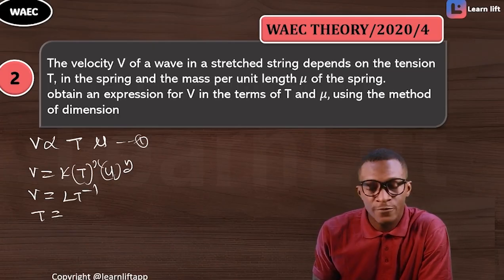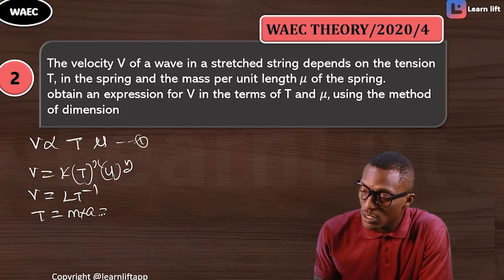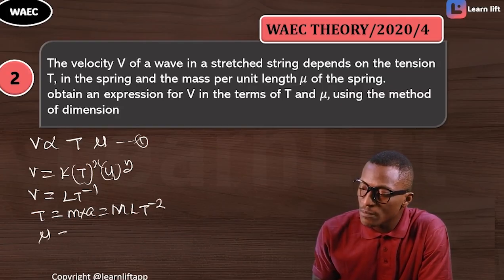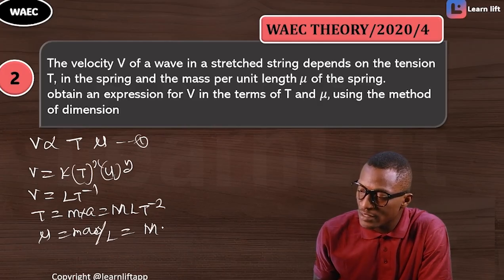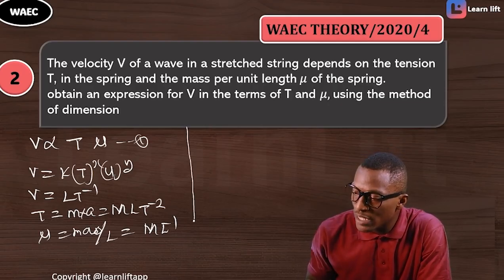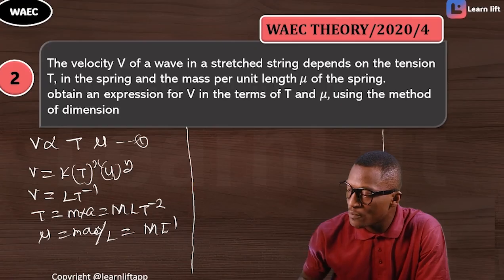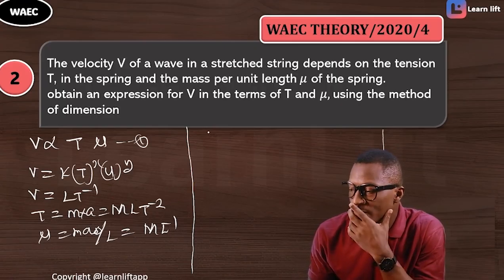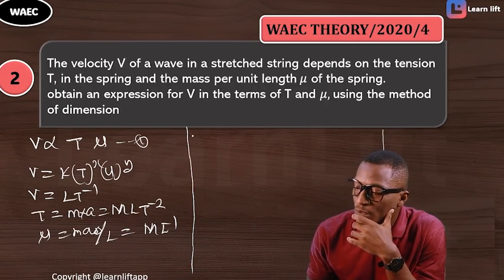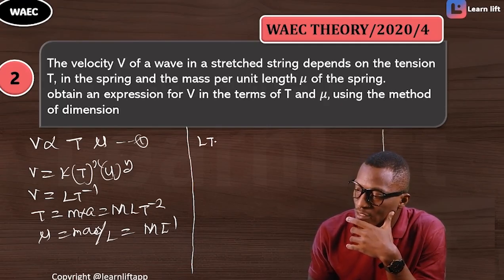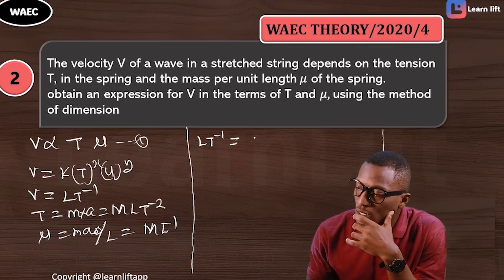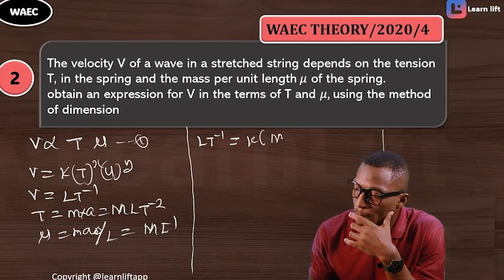The dimension for tension: tension is a force, and force is mass times acceleration, so that's MLT⁻². For μ, which is mass over length, that gives M·L⁻¹. So substituting in, we get: LT⁻¹ = k · (MLT⁻²)^x · (ML⁻¹)^y.